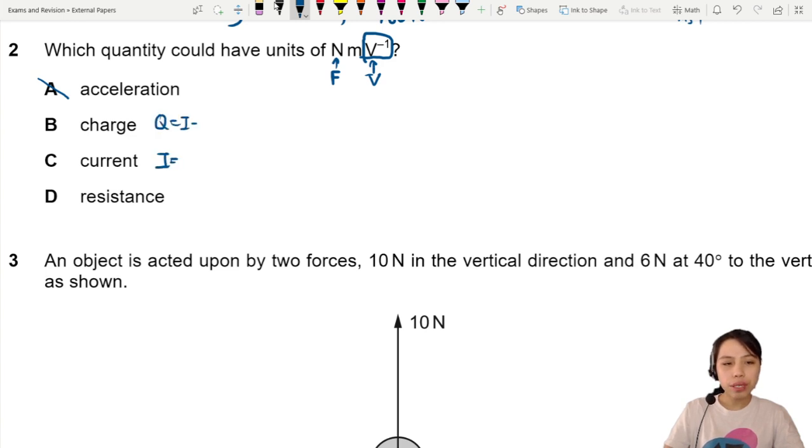Charge is Q = IT. What else has Q? F = QE. I think that's pretty much it. Then current, that's the same thing, Q over T. I = V/R. Resistance? R = ρL/A. What else? Current is I = nAvQ. If you look at all these equations we just wrote out, the only one that has force and electricity related is this one.